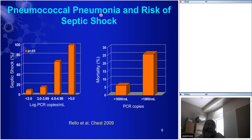Increasing microbial load should be associated with septic shock and death. A simple study of pneumococcal pneumonia by Rello and colleagues in Spain demonstrates that the risk of getting septic shock goes up linearly with microbial load. If the microbial load is increased in the blood, you're more likely to have septic shock. And the chance of dying when you have pneumococcal septicemia goes up substantially when your microbial load is increased.